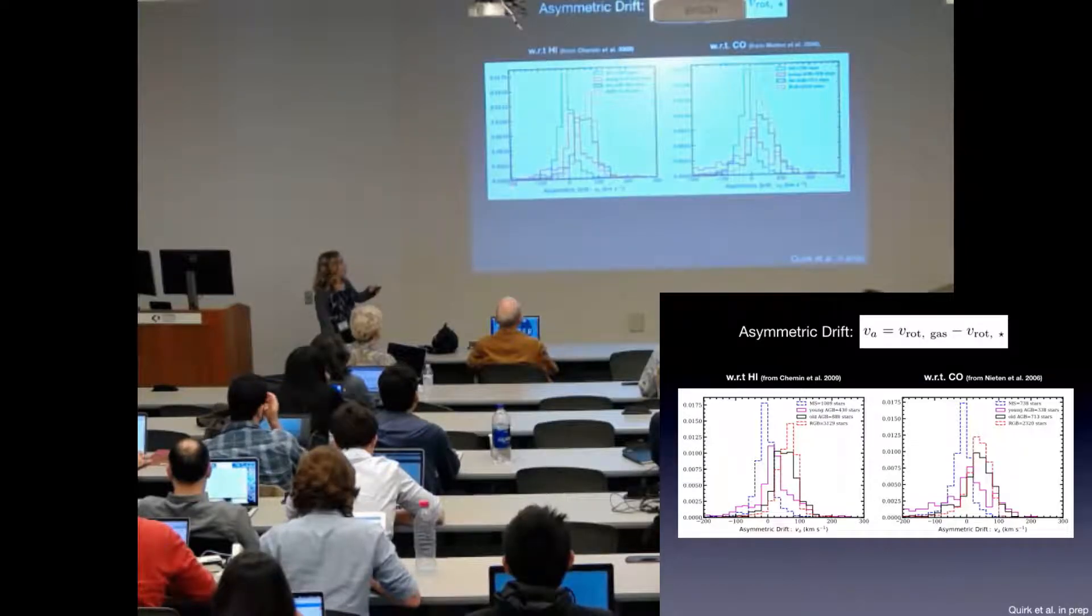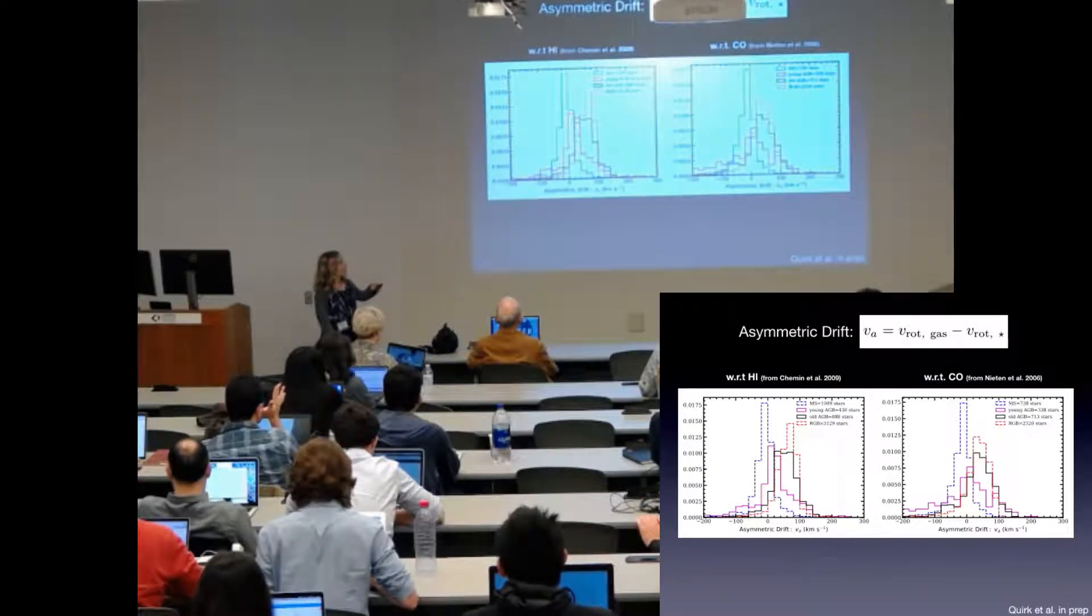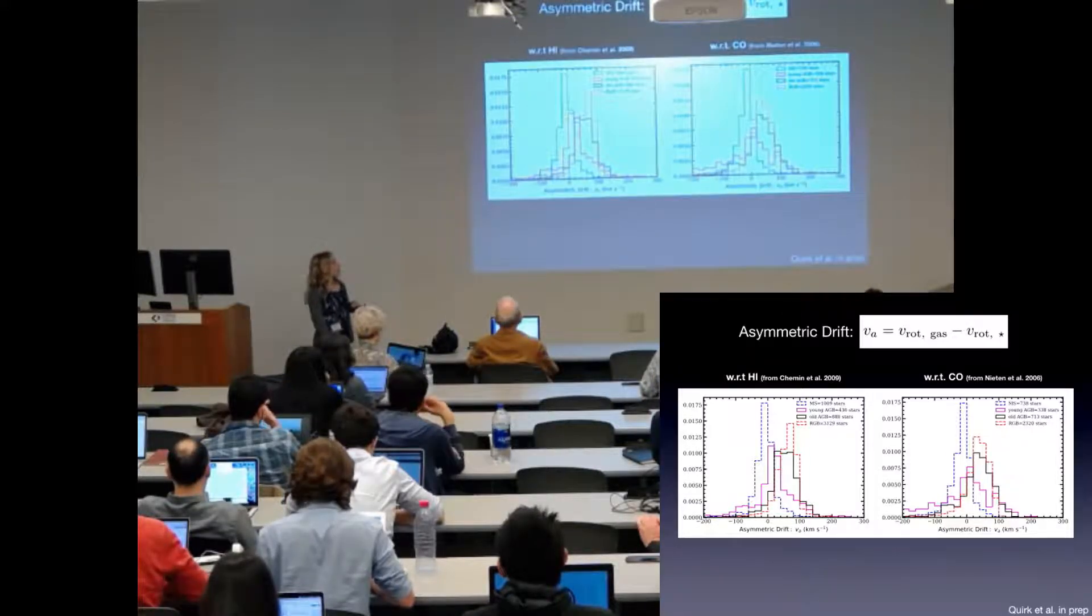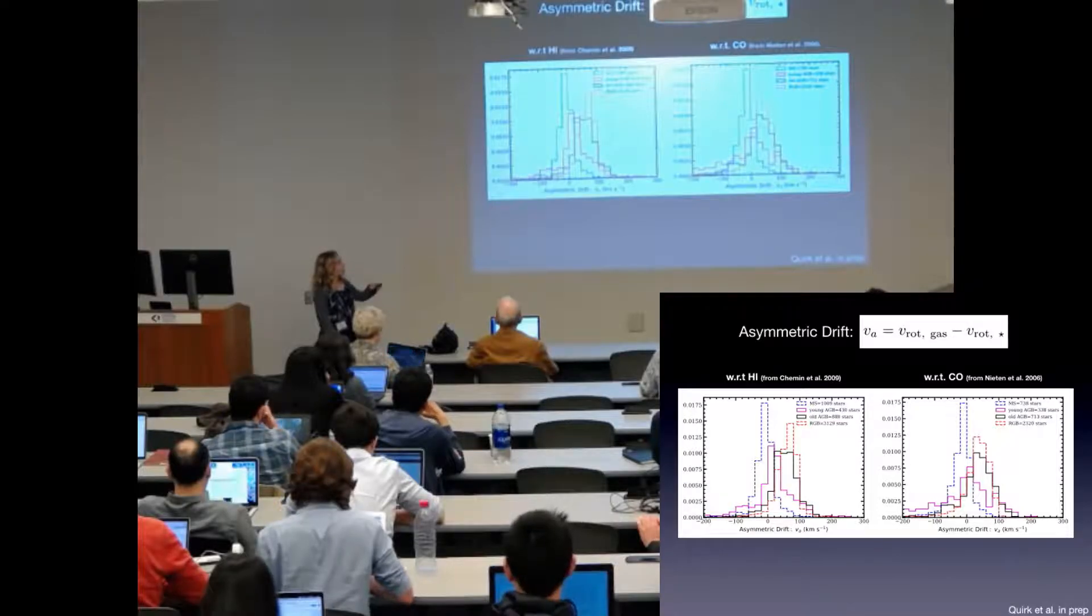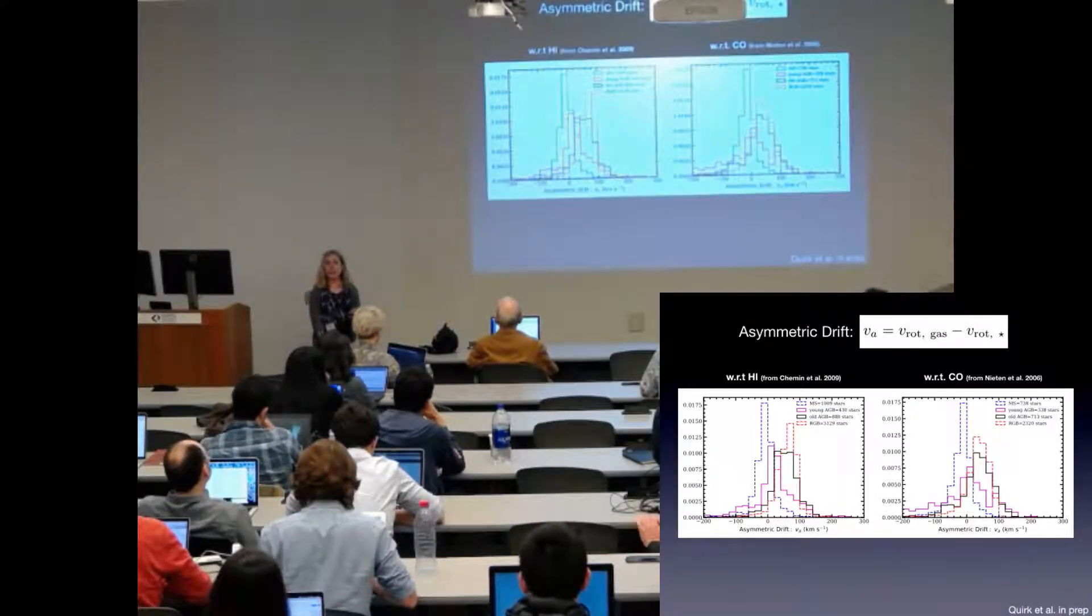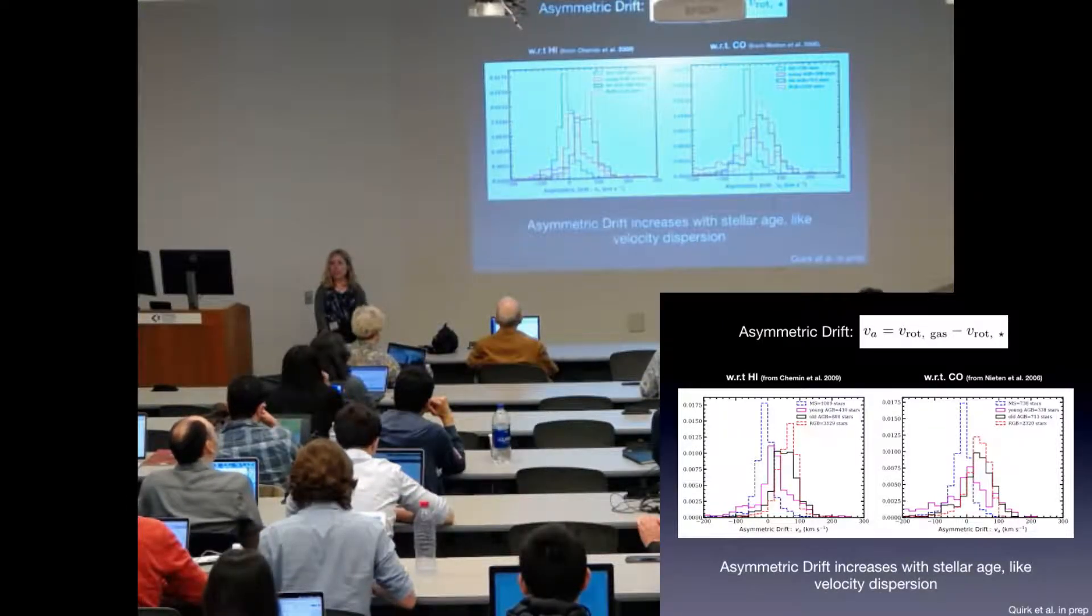In each of these panels, the blue is the short-lived main sequence stars. The magenta is the younger AGB stars. The black, the older AGB stars, and the red, the longest-lived RGB stars. For both of these panels, you see that the peak of the distribution shifts to the right or towards a greater magnitude of asymmetric drift as the longevity of the stellar populations increases.